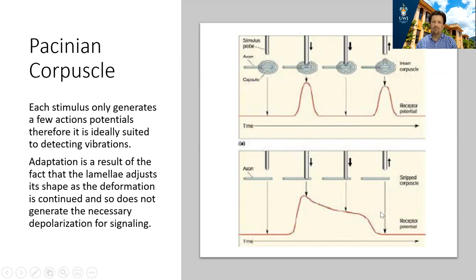This tells us that something about the presence of the lamellae enables the receptor to be fast-adaptive. It has been hypothesized that the fluid present in the lamellae leads to the fast adaptation. When initial deformation takes place, this fluid is displaced and that pressure is transmitted to the nerve, leading to a change in membrane conductance. But that fluid quickly flows back in and restores the normal resting membrane potential, leading to no further generation of action potentials.